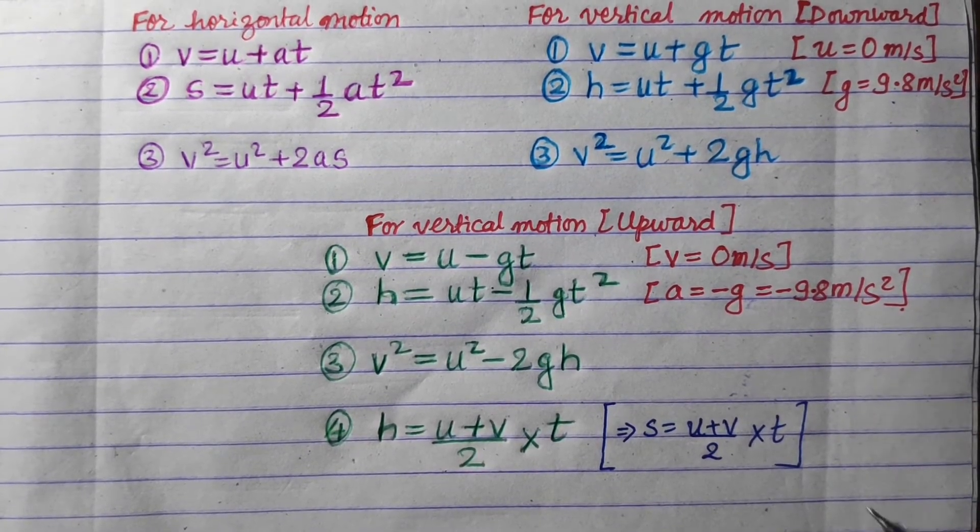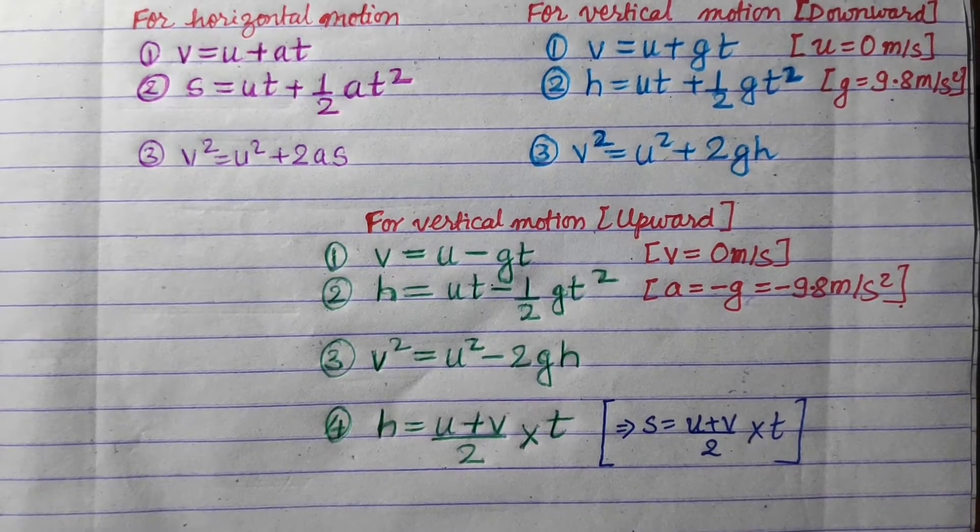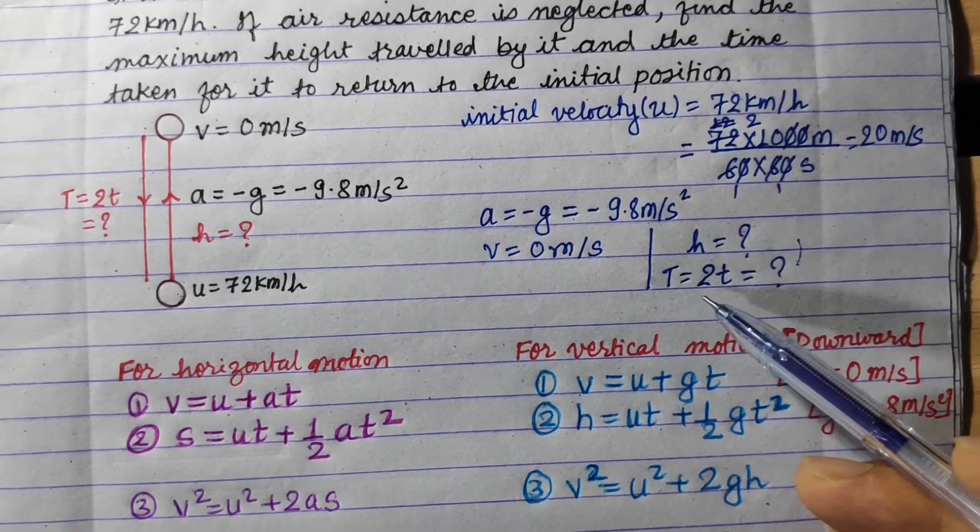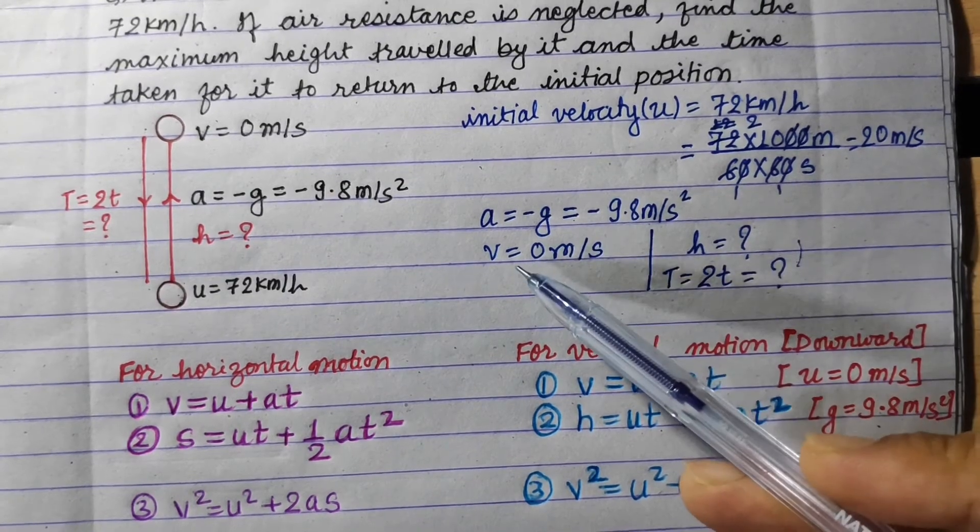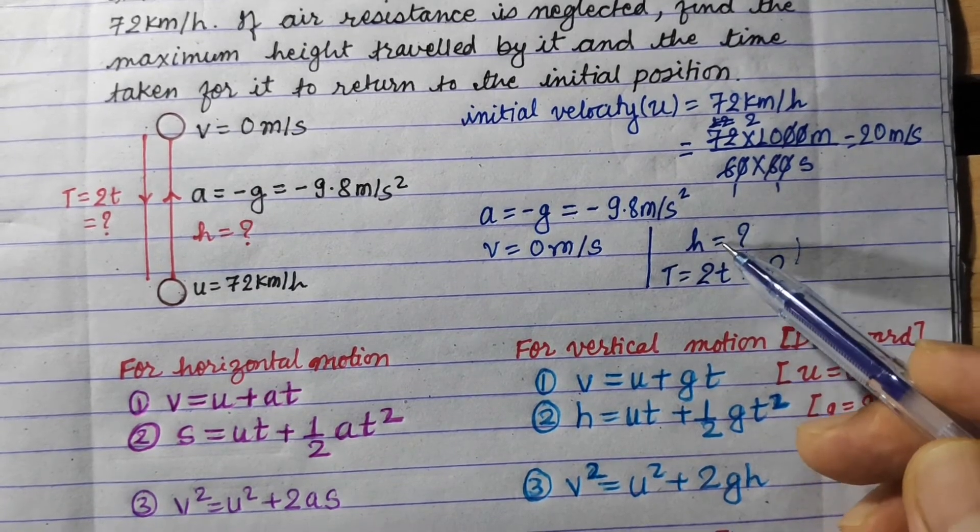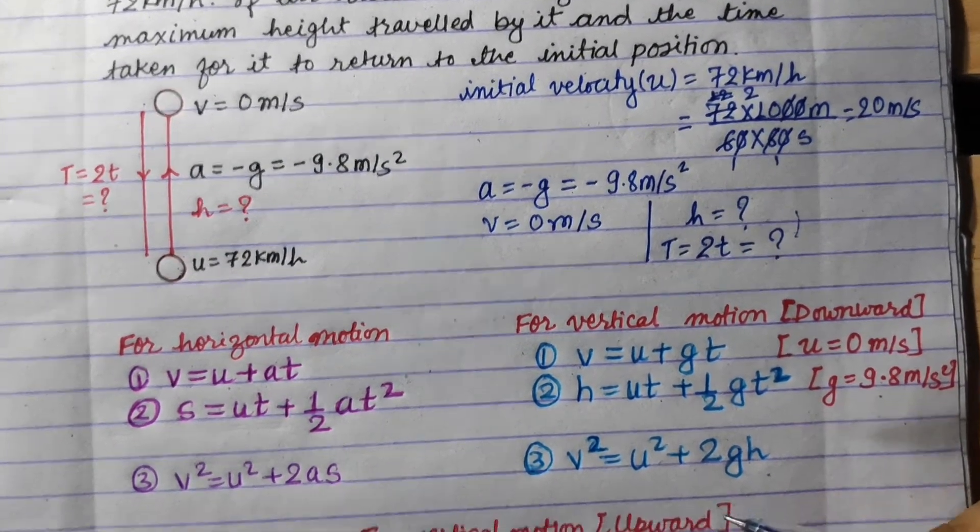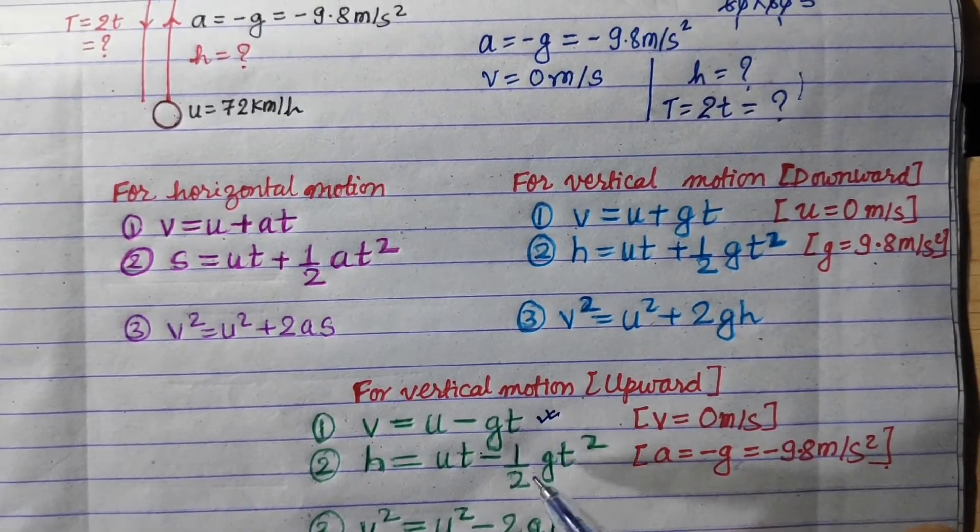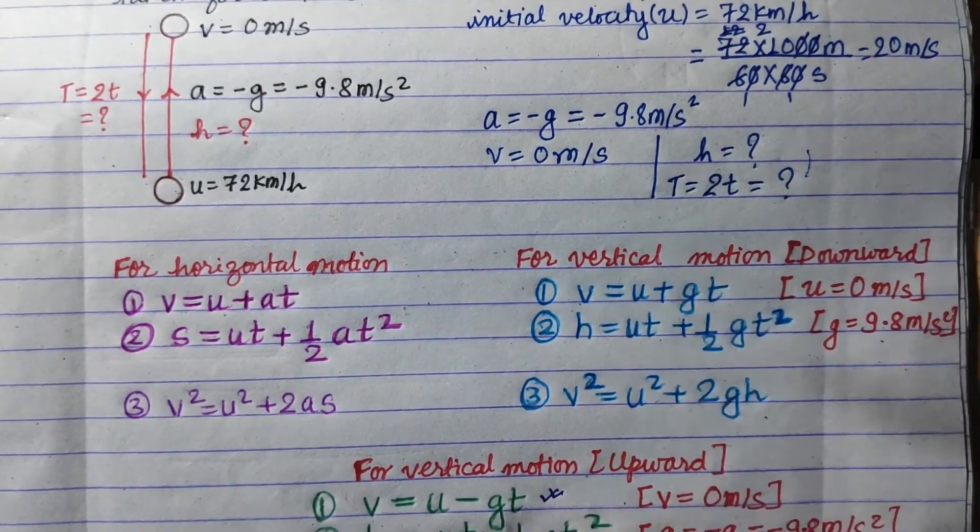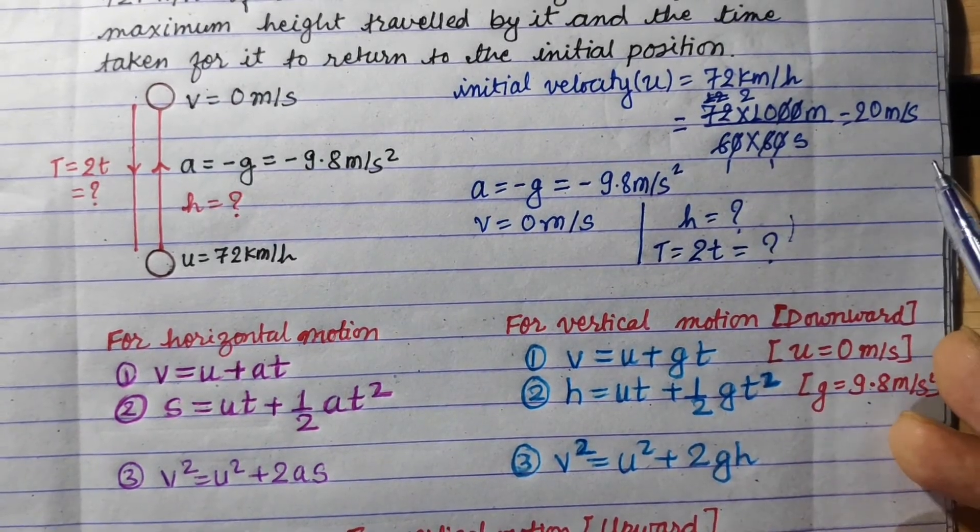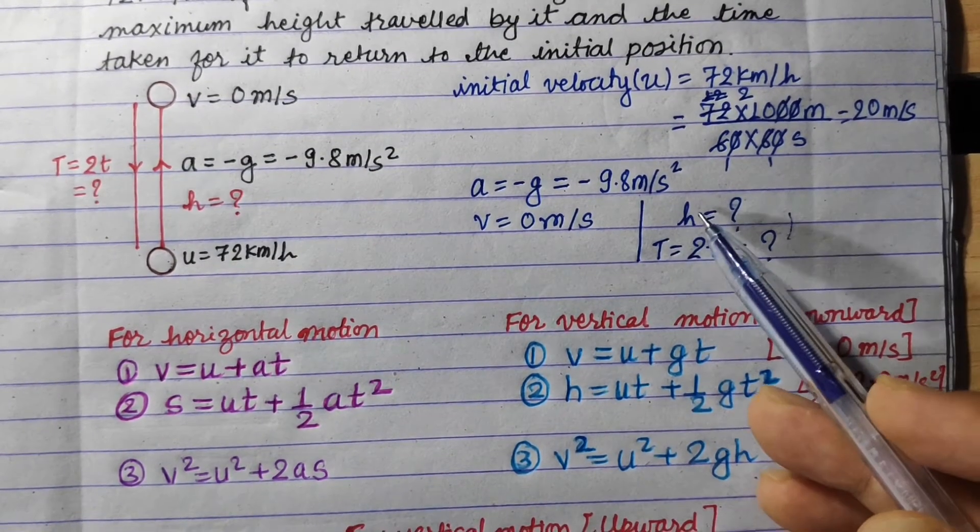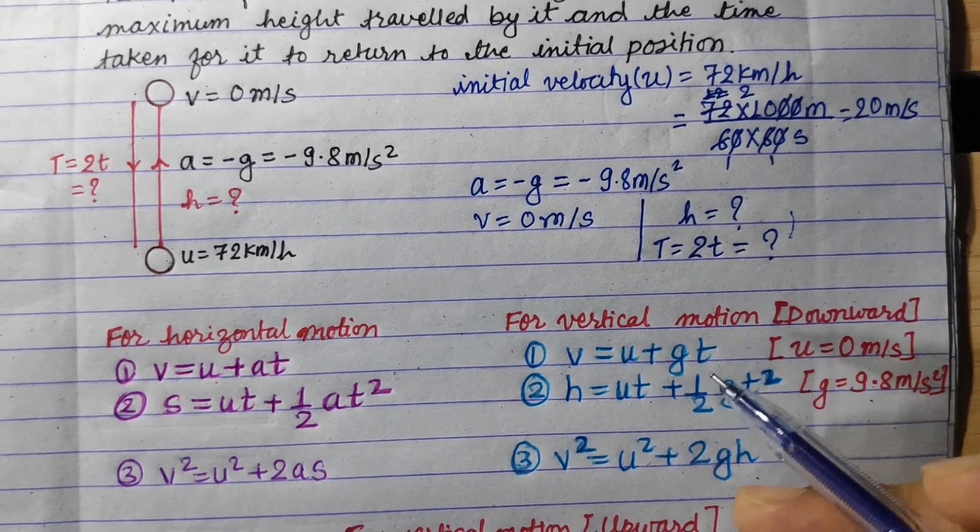We need to find h and time. We have v, a, g, and u. So we need to find height and time using the formulas. v is 0 m per second, u is 20 meter per second, g is 9.8.